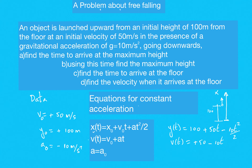Part A: find the time to arrive at the maximum height. At the maximum height, the velocity is zero. So we impose v equals zero in the velocity equation: 0 = 50 − 10t. From this equation we can solve for t to get the time to reach the maximum point.